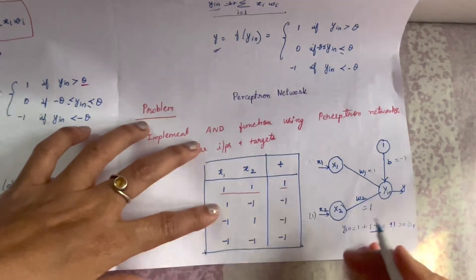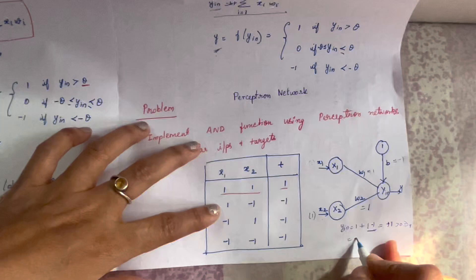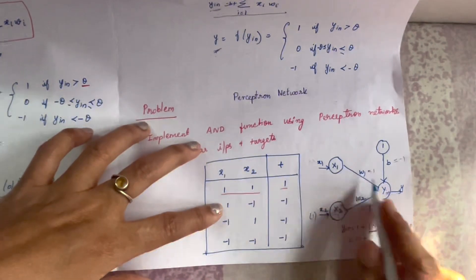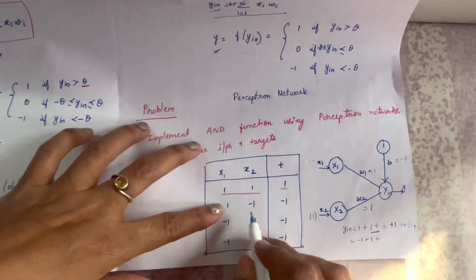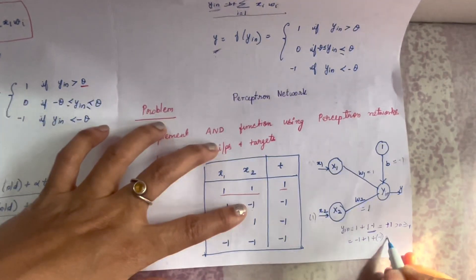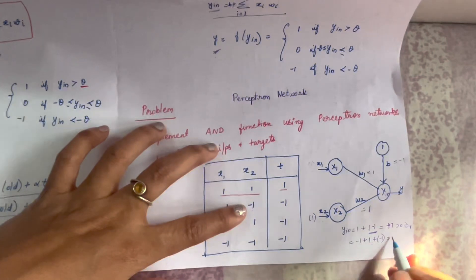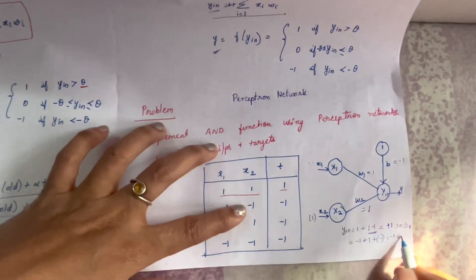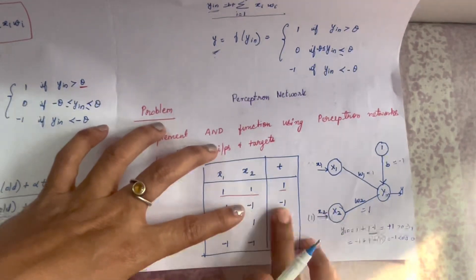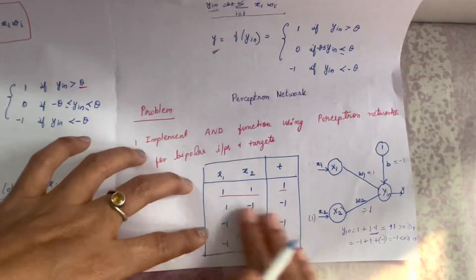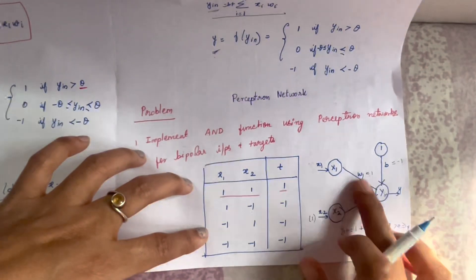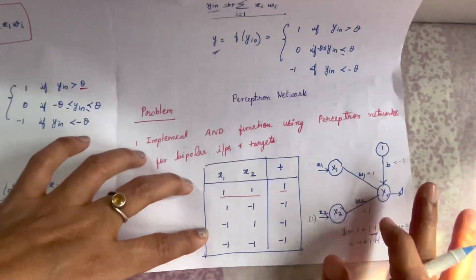For all sets of inputs, using the final weights w1=1, w2=1, and b=-1, we get the correct output. This confirms that the weights we have received are correct for implementing the AND function using the Perceptron Network.